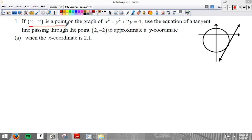This is a point on the graph. Use the equation of the tangent line passing through the point to approximate a y-coordinate when the x-coordinate is 2.1. So 2, negative 2's right here. In case you couldn't tell, we have a little figure going on. And the idea is if I nudge the x-coordinate a little bit, if I go a little bit to the right.